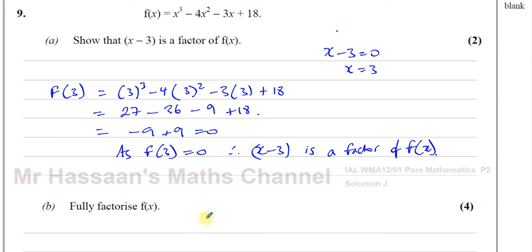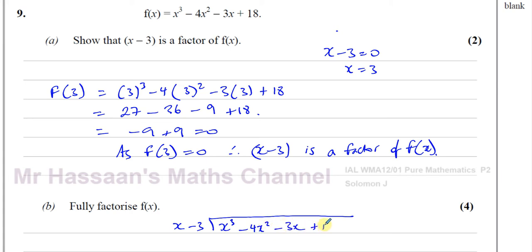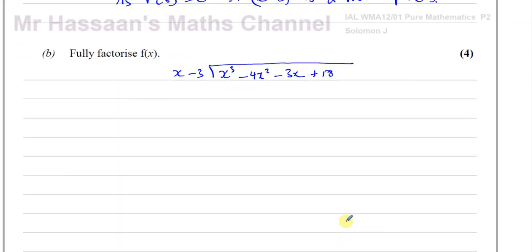I'm going to use algebraic long division. You put the known factor, x minus 3, on the outside, and the function on the inside, writing terms in descending order: x cubed, minus 4x squared, minus 3x, plus 18. x into x cubed goes x squared times. Multiply x squared by x minus 3 to get x cubed minus 3x squared, then subtract. x cubed minus x cubed is 0; minus 4x squared plus 3x squared gives minus x squared. Bring down the next term, minus 3x.